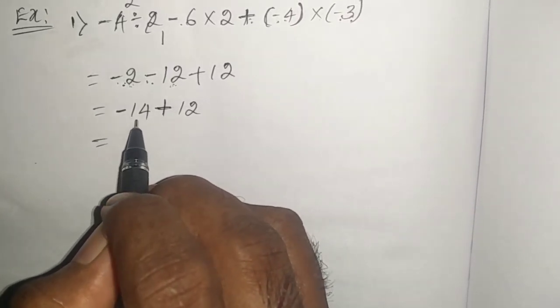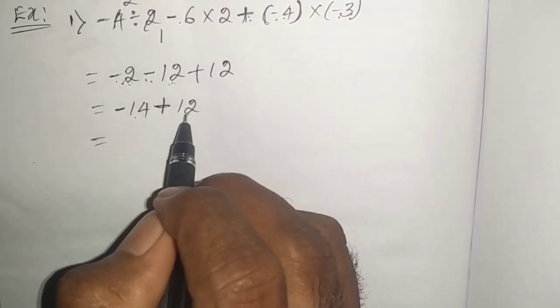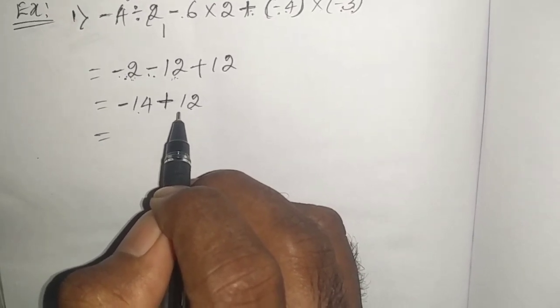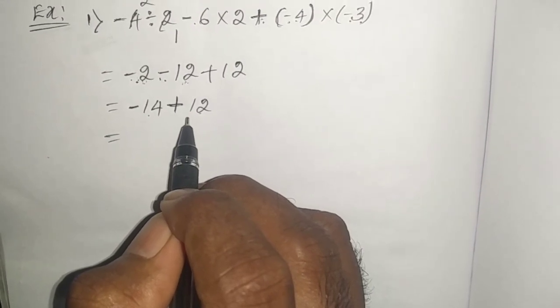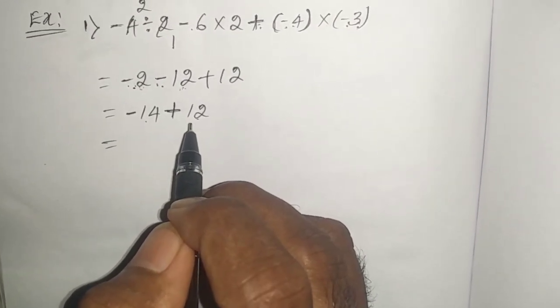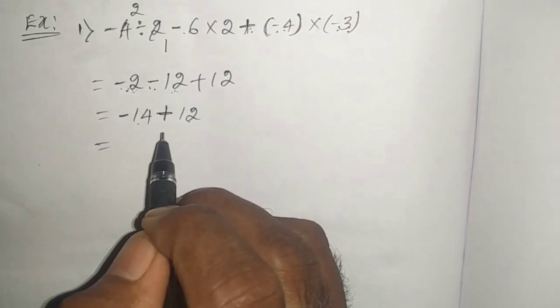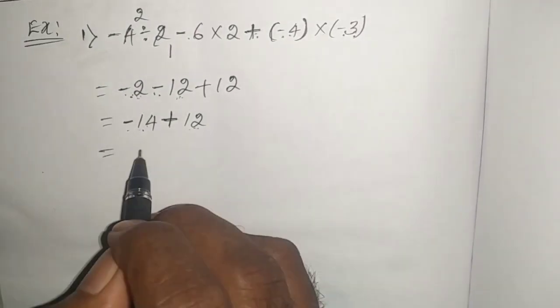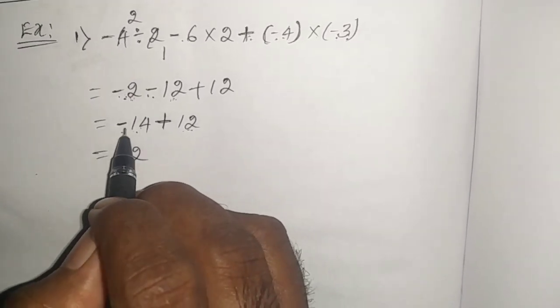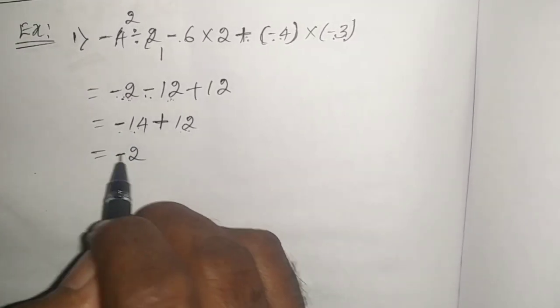Here you have to subtract because two numbers have different sign. You just remember two or more numbers have same sign, add them. If two or more numbers have different sign, subtract them. See here. These two numbers have different sign. Subtract them. 14 minus 12, 2 and keep the bigger number sign. Bigger number sign is minus. Here minus 2.